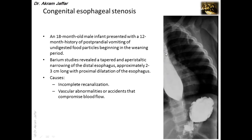In this contrast X-ray, there is distention of the proximal part of the esophagus with narrowing of about two to three centimeters in length, but the dye is passing into the stomach. The stomach is visible in its normal position below the diaphragm, and the gastroesophageal junction is also below the diaphragm.